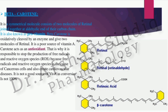When beta-carotene cleaves, it gives two retinol molecules, as seen in its structure. Beta-carotene is a very potent antioxidant and is responsible for stopping the production of free radicals. Free radical injury is a main cause of cancer development and problems associated with cardiovascular diseases.